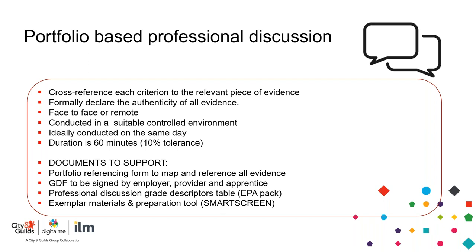If doing face to face, appropriate safeguarding and health and safety provisions must be in place, in a suitable controlled environment — ensuring the IEPA, the apprentice, and the employer are all safe. Whether in a college or PTP, it must be a suitably controlled environment where the apprentice won't be distracted. People should not be walking in and out.